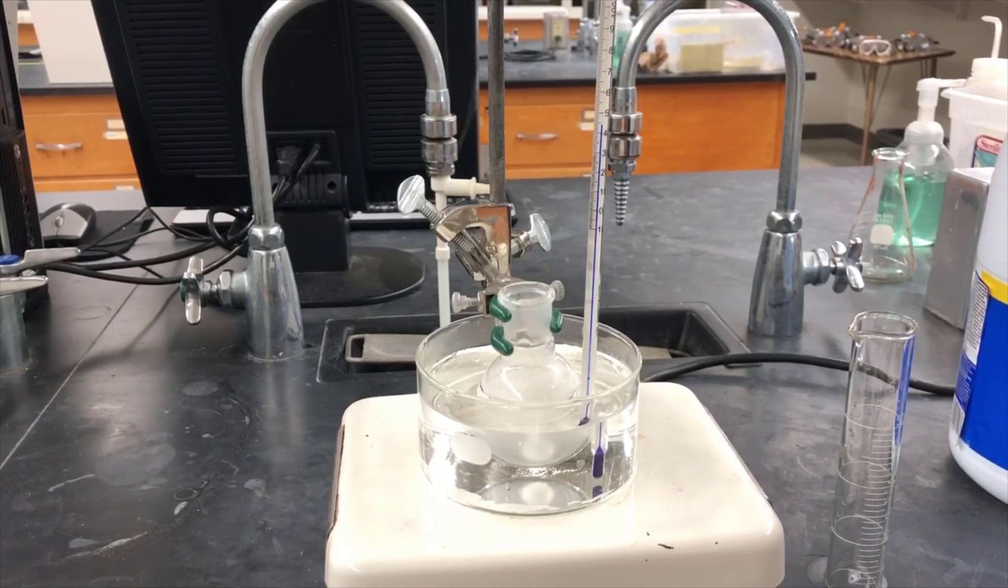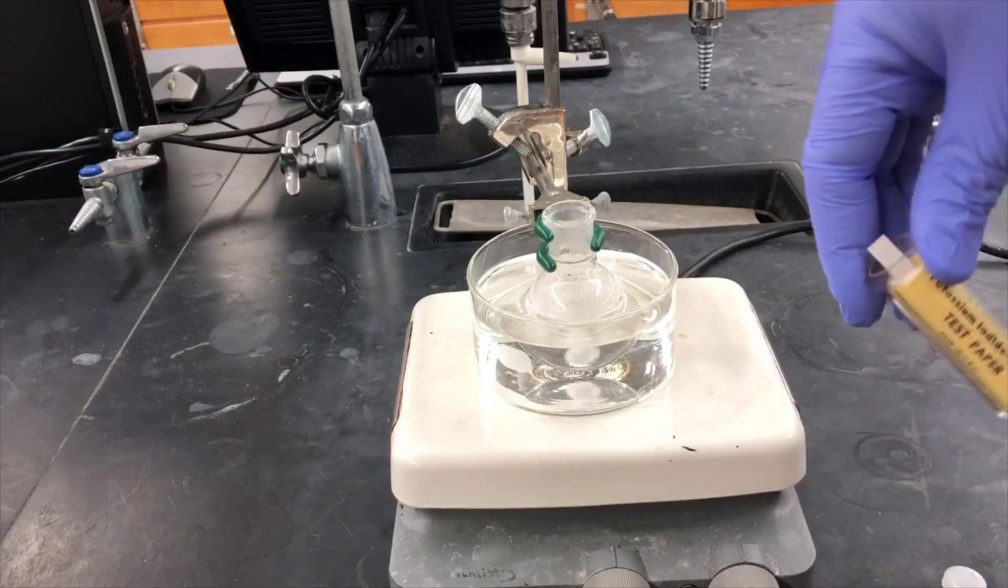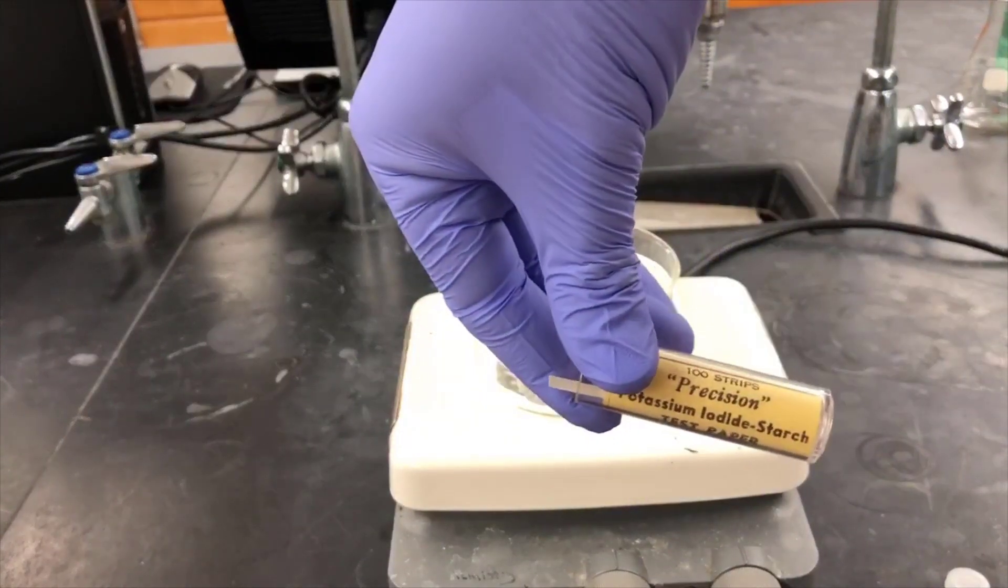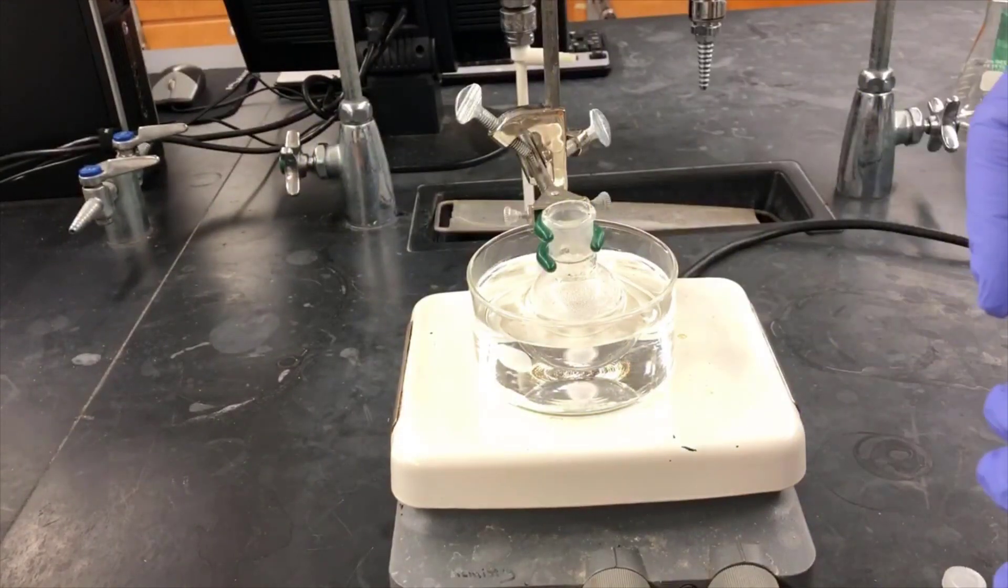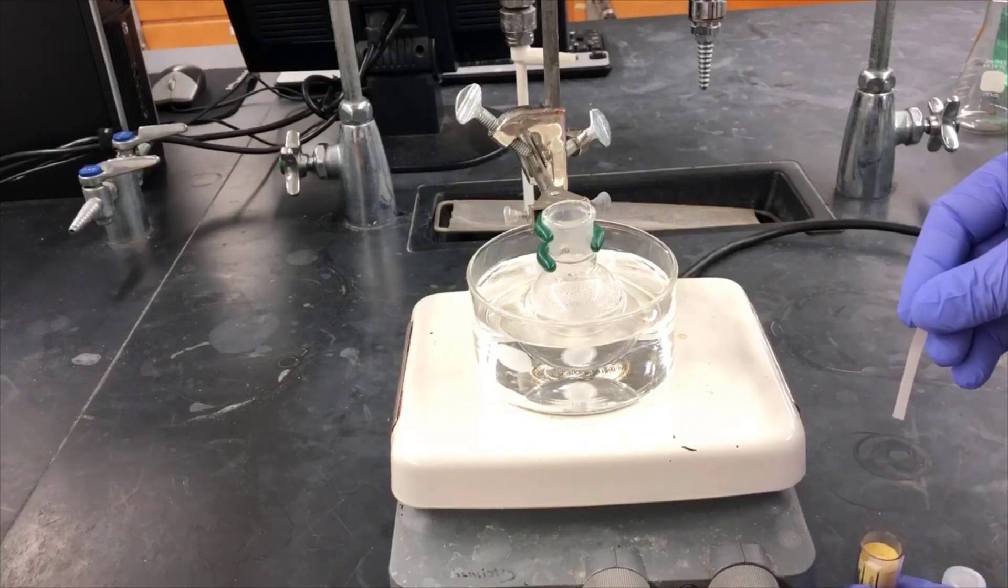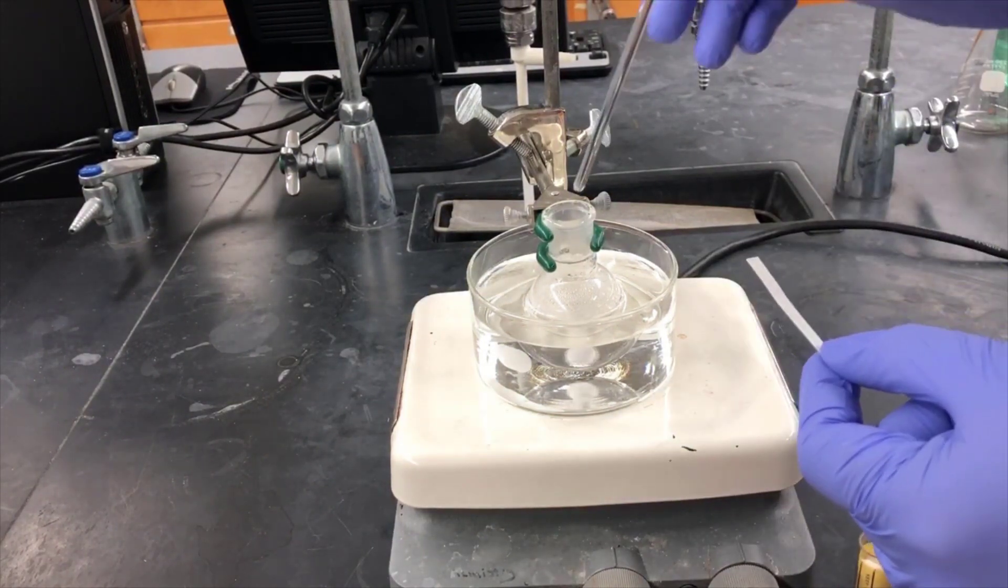After 20 minutes, the oxidation of cyclohexanol to cyclohexanone should be complete. Now we need to test to see if there's any leftover hypochlorous acid. These are potassium iodide starch paper test strips. When they touch hypochlorous acid, they turn a black color. I'm going to dip a glass stir bar into the solution and touch it to the test strip to test the solution.